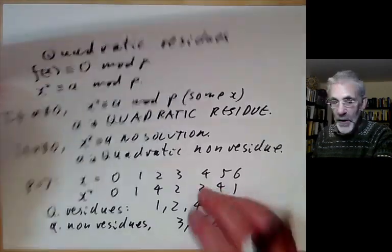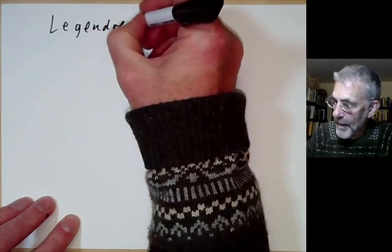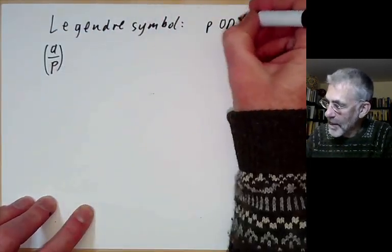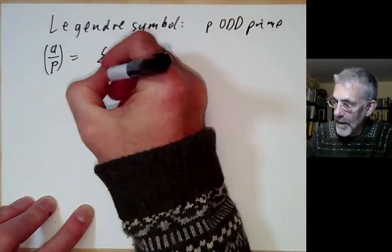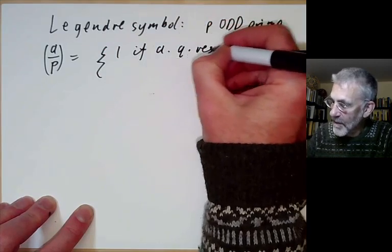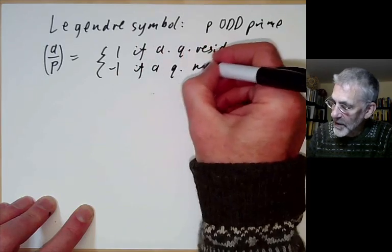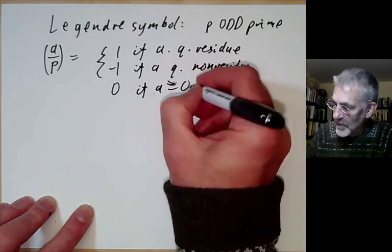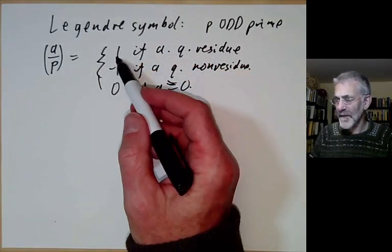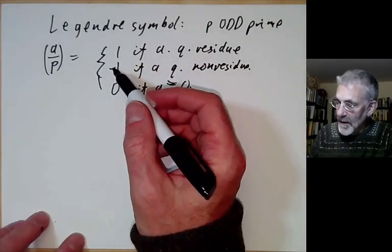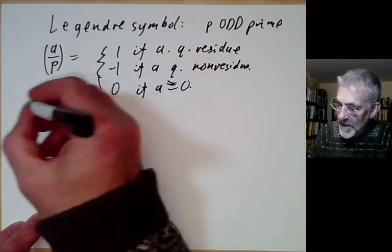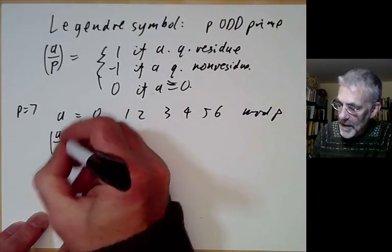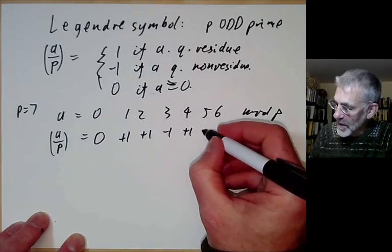There's a very common piece of notation for this given by the Legendre symbol. For p an odd prime, the Legendre symbol (a/p) is defined to be 1 if a is a quadratic residue, −1 if a is a quadratic non-residue, and 0 if a ≡ 0 mod p. For example, taking p = 7 and a = 0, 1, 2, 3, 4, 5, 6, the values of (a/p) are 0, +1, +1, −1, +1, −1, −1.